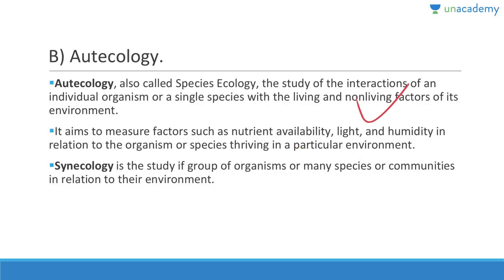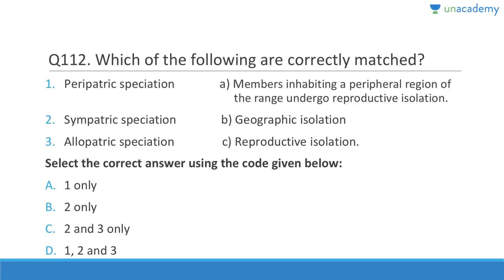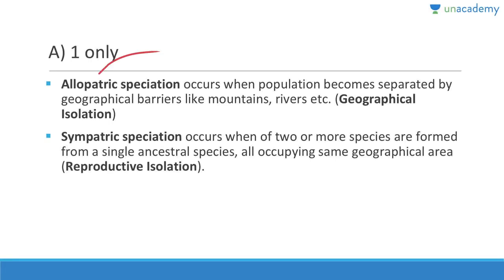Synecology is the study of groups of organisms or many species (communities) in relation to their environments. Question 112: Peripatric speciation — members inhabiting a peripheral region undergo reproductive isolation — correct. Sympatric speciation involves reproductive isolation within the same geographic area. Allopatric speciation involves geographical isolation. Answer is one only.